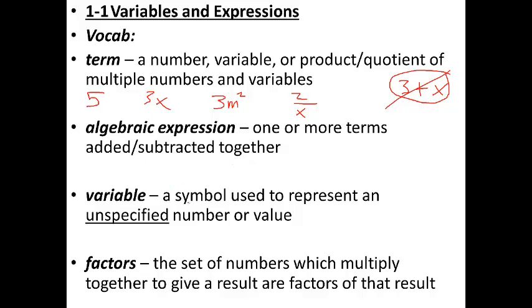The next thing is a variable. It's any symbol that we use to represent an unspecified number or value. What that means, it doesn't mean that we don't know or can't know the value. It just means we haven't specified what it is. So sometimes a variable could have a lot of different values. Sometimes it has only one value, but we use a letter, usually, to represent that value in an equation.